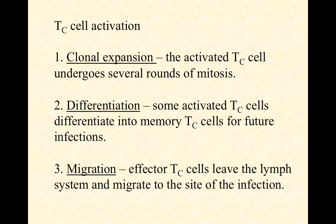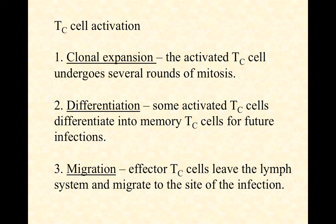Differentiation also takes place. Most of these cytotoxic T cells will be effector cytotoxic T cells that will get involved in the current battle and have a short lifespan of a few weeks to a few months at most. But a small pool of them will differentiate into memory cytotoxic T cells that won't get involved in the current battle, but will stick around for future infections. It's those memory T cells and memory B cells that help us fight off future exposures — they're really at the heart of vaccination as well.